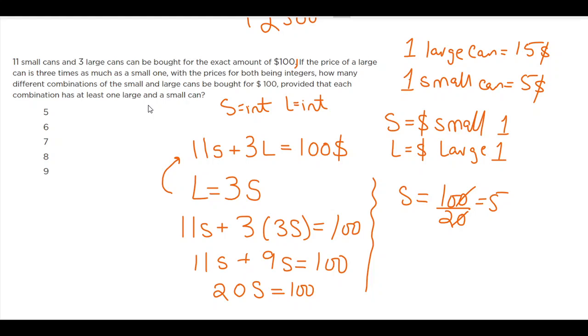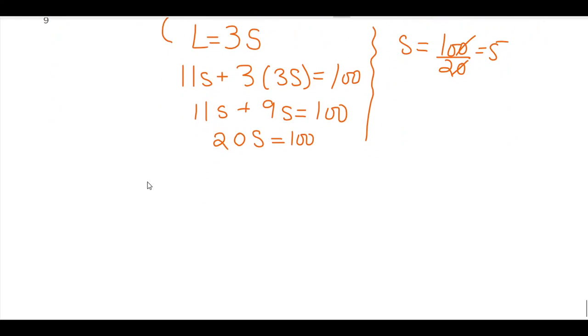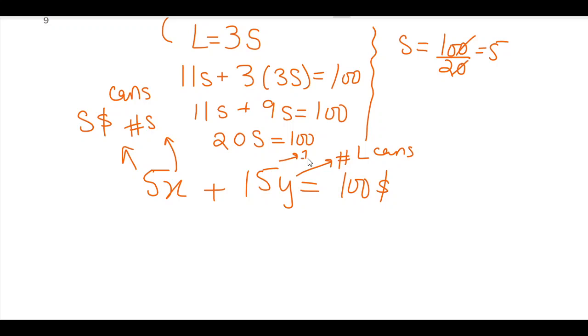So I have the values. Let's say 5 times x, this is the small price and this is the number of small cans, and 15y equal to 100. So this y is basically the number of large cans and this is the price of one large can.